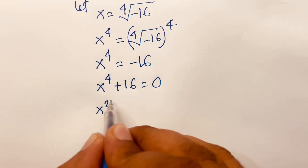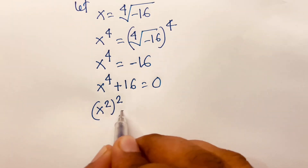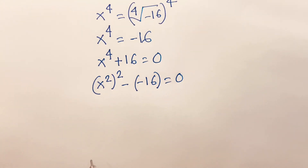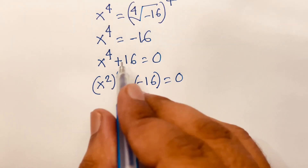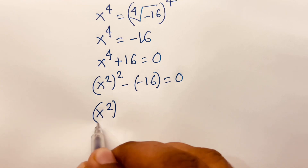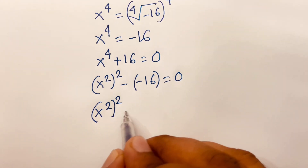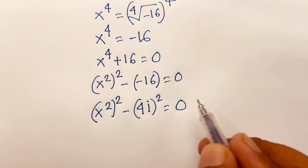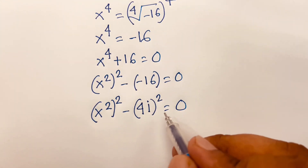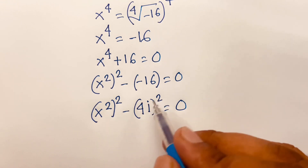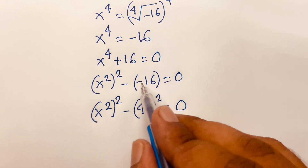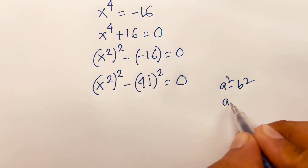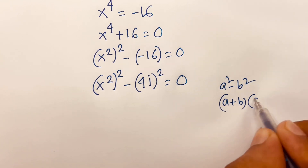Rearranging: x⁴ + 16 = 0, which becomes (x²)² - (-16) = 0. Now, since i² = -1 and 4² = 16, we have -1 × 16 = -16, so -16 = (4i)², giving (x²)² - (4i)² = 0.